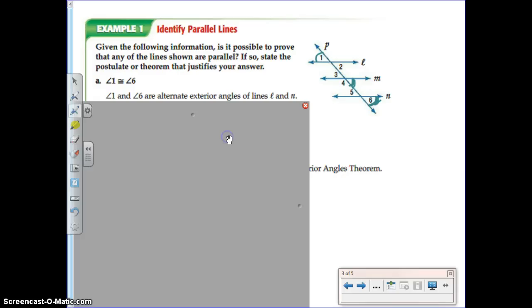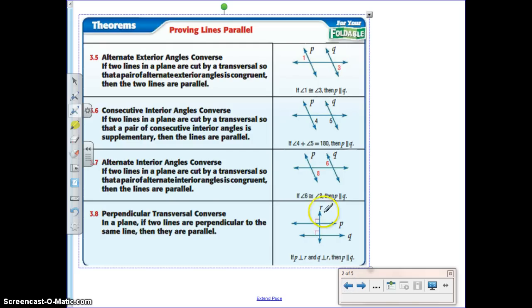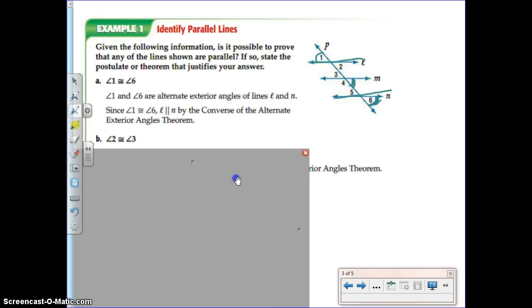Another way to look at it is angle 1 and angle 6 are alternate exterior angles to these two lines L and N. And when alternate exterior angles are congruent, remember we said alternate exterior angles are congruent, we then know the lines are parallel. So that's the converse of that theorem. So because of that, we know the lines are parallel.